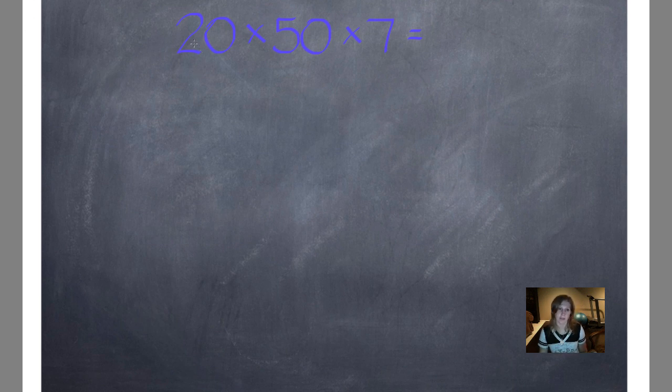When I look at these numbers, I can multiply 50 times 7 together pretty easily using mental math, but the answer to that is a little trickier to multiply by 20. I can do it. It's just trickier, but if I multiply 20 times 50 together first, I can use my mental math strategies pretty easily underlining my non-zero digits. 2 times 5 is 10.